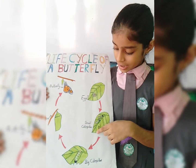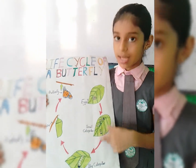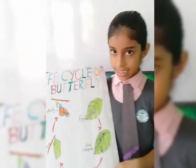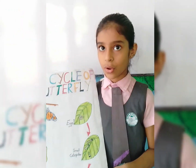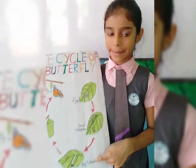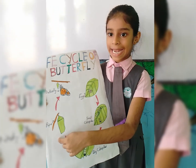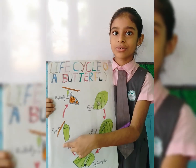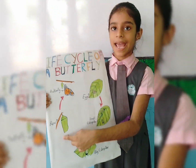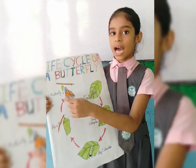a small caterpillar hatches from the egg. The caterpillar eats leaves and grows into a big caterpillar. Then the caterpillar will build a house called Hoopa and lives there.